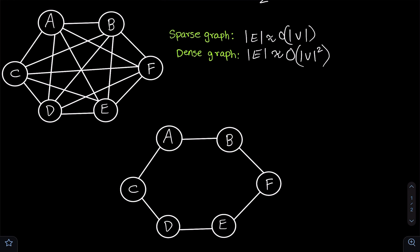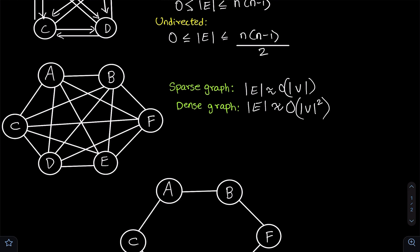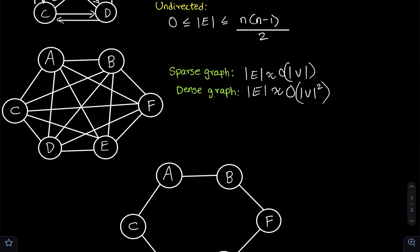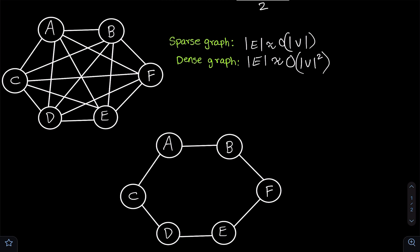A dense graph is one where the number of edges is in the order of the number of vertices squared. If you count the total edges here, it would be n times (n-1) divided by 2. With 6 vertices, that's 6 times 5 divided by 2, giving 15 edges. That's why we call this a dense graph.